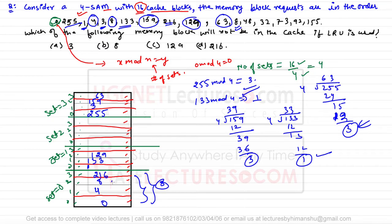Next is block 48, which also maps to set number 0 (48 mod 4 = 0), but set 0 is full. Using LRU, we look at which block was referenced least recently. Among 0, 4, 8, and 216, block 0 was referenced the longest time ago, so we replace block 0 with block 48.